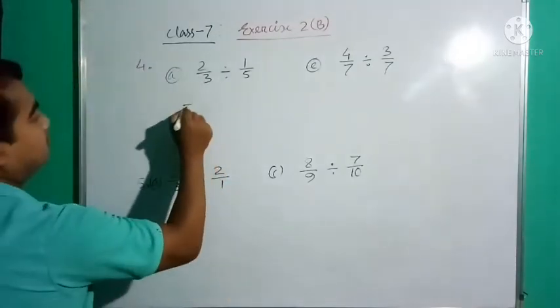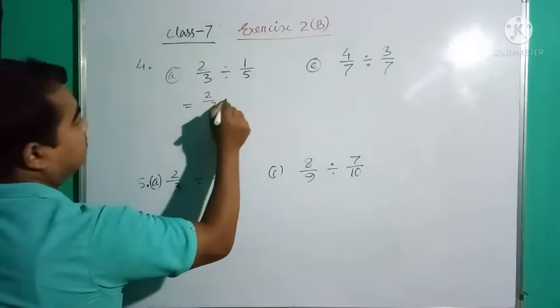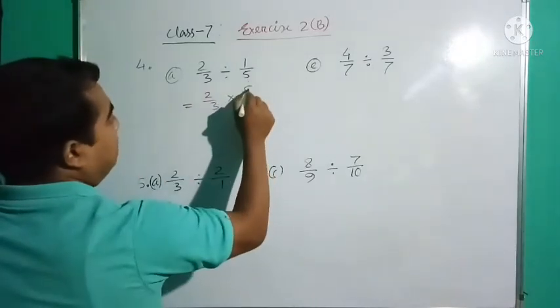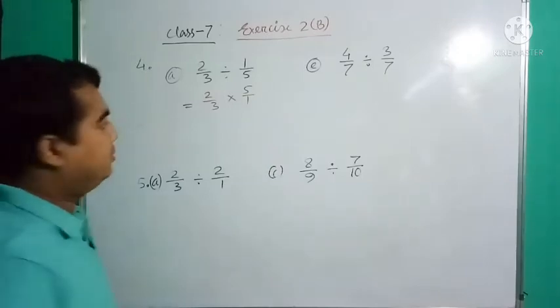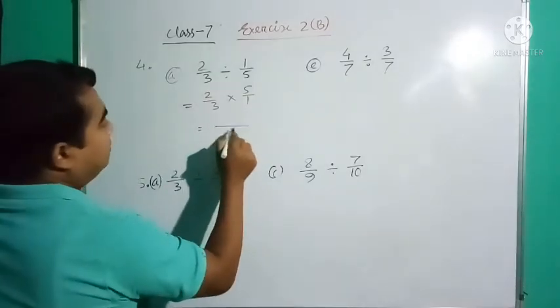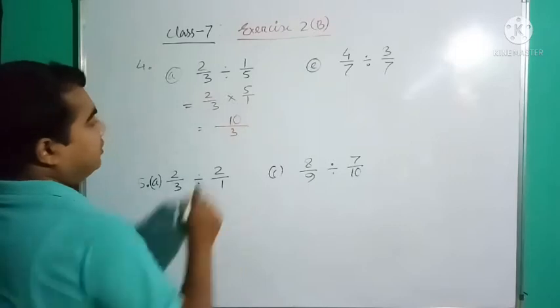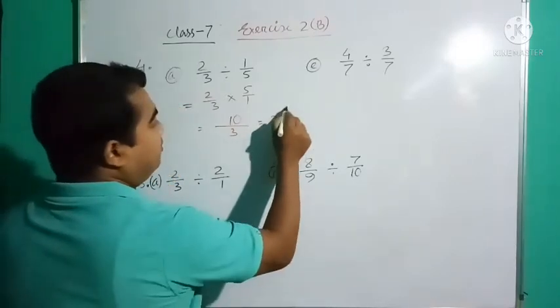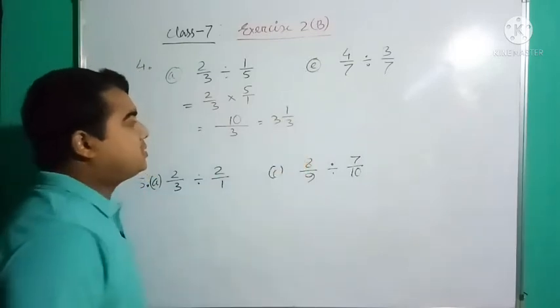See, 2/3 divided, the opposite is multiplication, so write 1/5 as its reciprocal. Now multiply, 3 times 2 is 6. Now write in mixed fraction: 3 into 9 plus 1, that is 3 and 1/3.